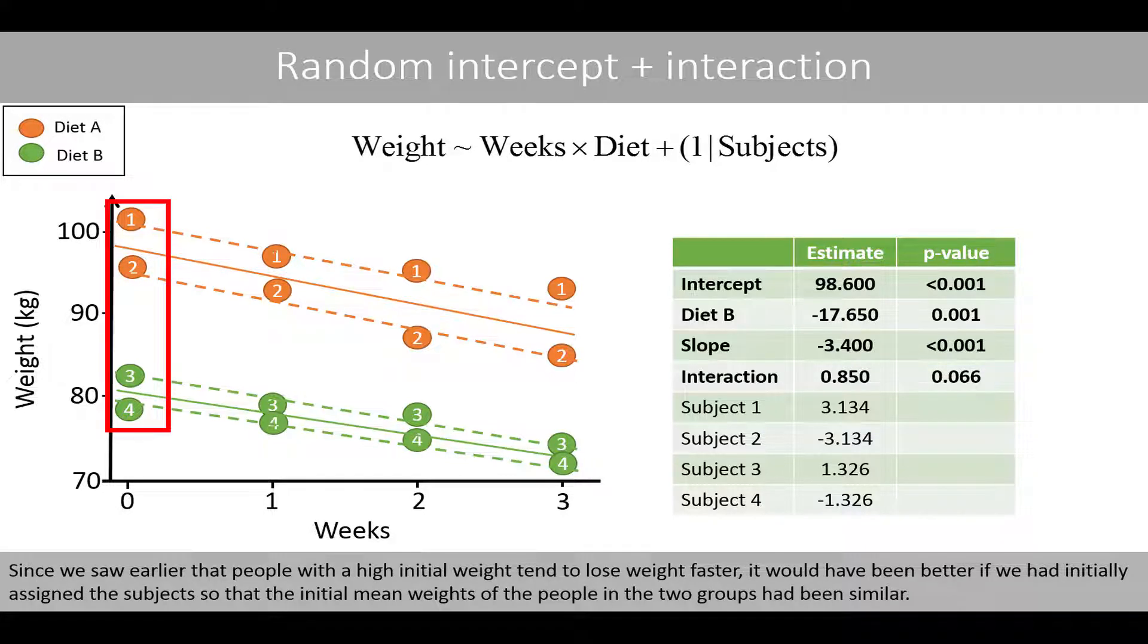Since we saw earlier that people with a high initial weight tend to lose weight faster, it would have been better if we had initially assigned the subjects so that the initial mean weight of the people in the two groups had been similar.